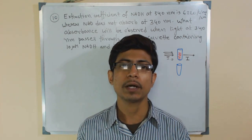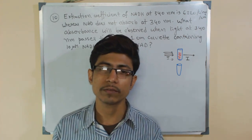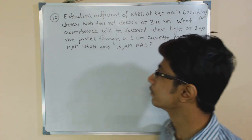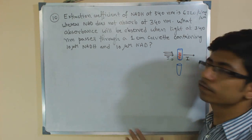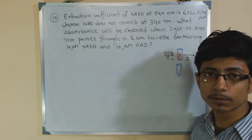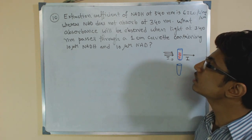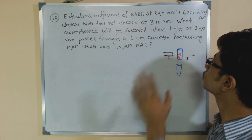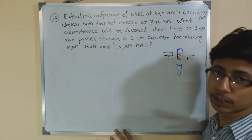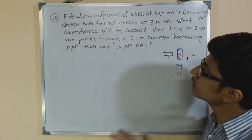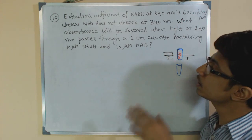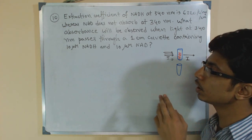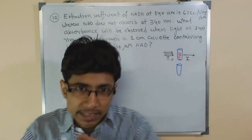In biology with math, we are talking about different mathematical problems related to biology and solving them. This time I'm going to talk again with another example from Lambert-Beer's law. The question: the extinction coefficient, also known as molar absorption coefficient (epsilon), of NADH at 340 nanometers is 6220. NAD does not absorb at 340 nanometers. What absorbance will be observed when light at 340 nm passes through a one centimeter cuvette containing 10 micromolar NADH and 10 micromolar NAD?